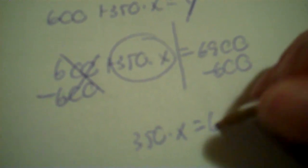Get x by itself. You've got plus and times, so minus 600 first: 350 times x equals 6,300. Then divide each side by 350. Six thousand three hundred divided by 350 is 18. So this person can take 18 credit hours for a cost of $6,900.